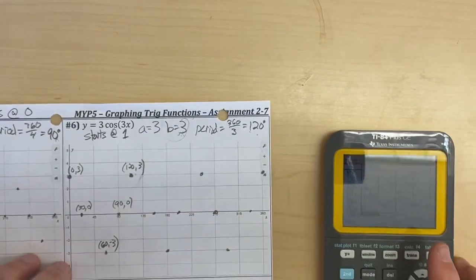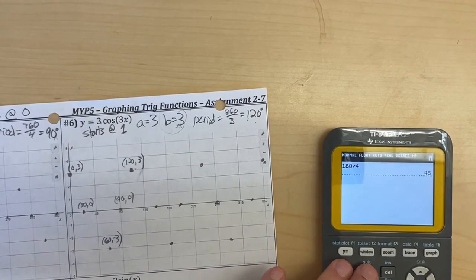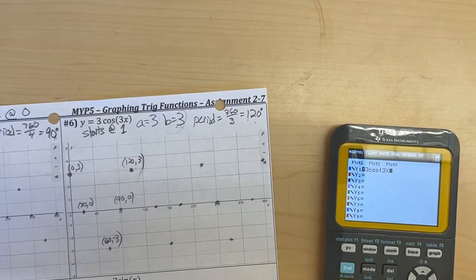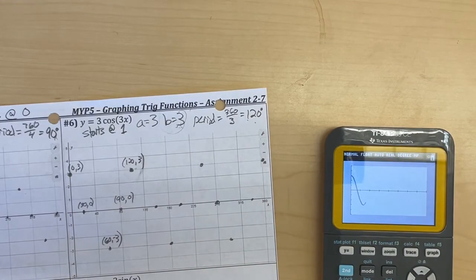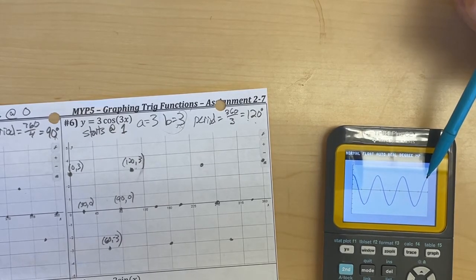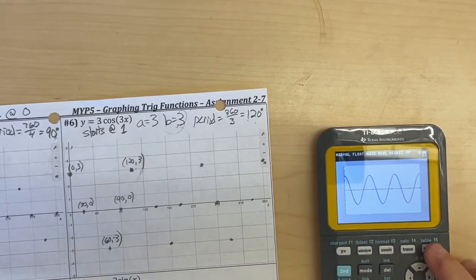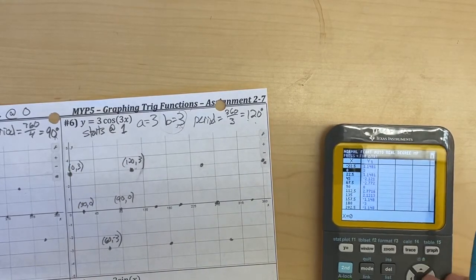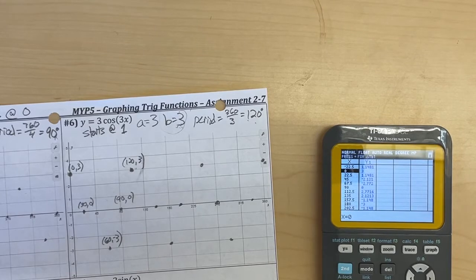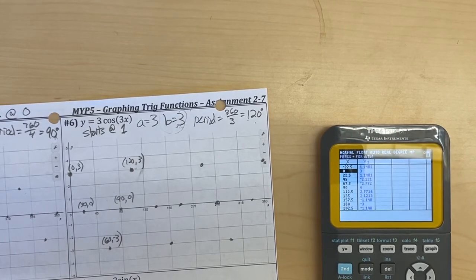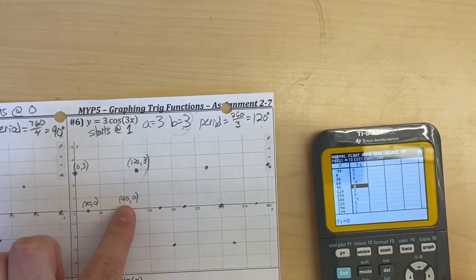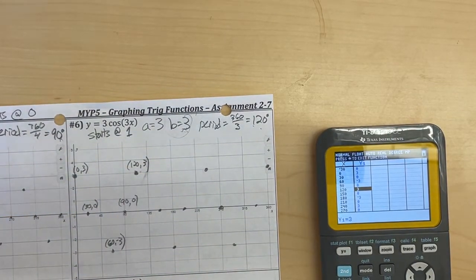Always double check using that piece of technology. I'll quit out and enter y equals 3 cosine of 3x, then hit graph. I want to look at the picture first — starting at 0, how many peaks do I have? I have 1, 2, and 3 peaks. I go to second graph to get my table of values, starting at 0, and change my table increment to every 30 degrees. My critical y values are 3, 0, negative 3, 0, and positive 3 for that one rotation.